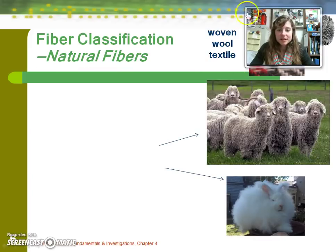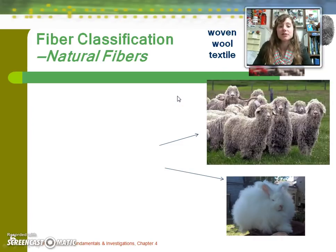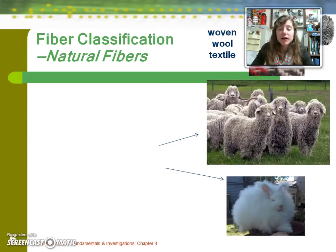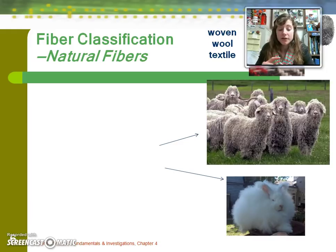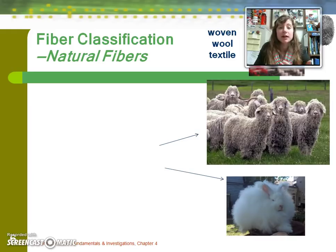Let's look at some different types of fibers. There are two major classifications: natural fibers and synthetic fibers. Natural fibers are, as their name suggests, naturally occurring — either from animals, plants, or minerals on the planet. Synthetic fibers are man-made.